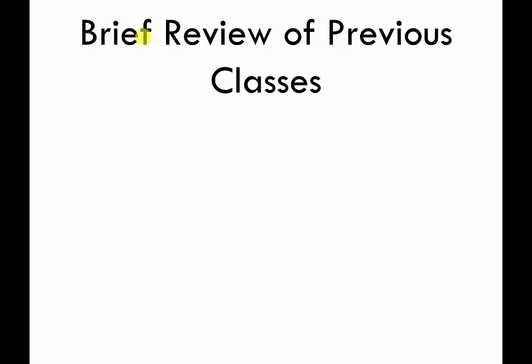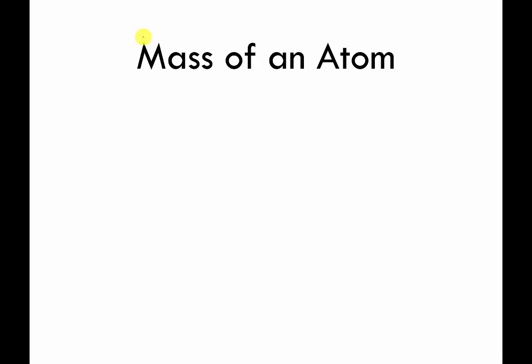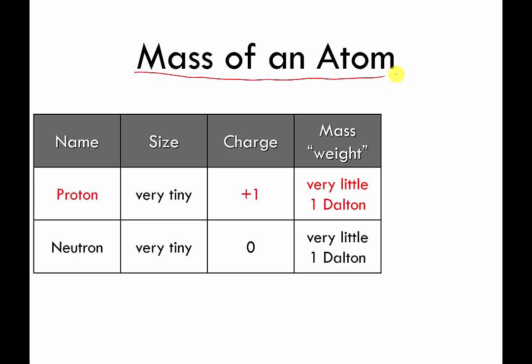I'm going to do a very brief review of some of the information that we've covered in the previous units. Starting off with roughly speaking the mass or the weight of an atom. Different types of atoms. So the protons and neutrons weigh about the same. They weigh about one Dalton. The electrons don't weigh enough to count.